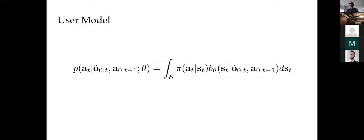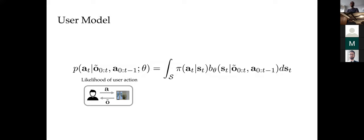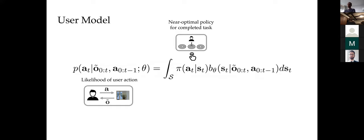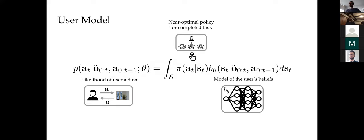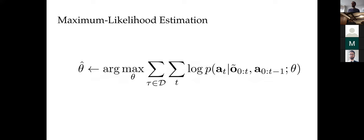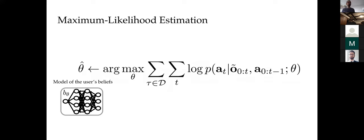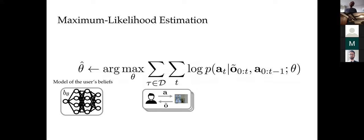We model the likelihood of the user taking a particular action given a history of observations and actions by marginalizing out the state. This involves computing a near-optimal policy for the completed task — that's one big caveat: you have to be able to do this for the training tasks at least. We represent the user's beliefs using a parametric model like a neural network, and train our model of the user's state estimation process using a simple maximum likelihood objective over the demonstrations.